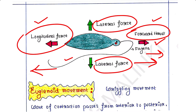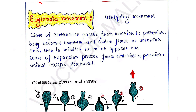This forward thrust pushes the body forward, so the Euglena moves in the forward direction. Because of this, Euglena rotates as it swims — it moves forward while rotating, at a rate of one turn per second.